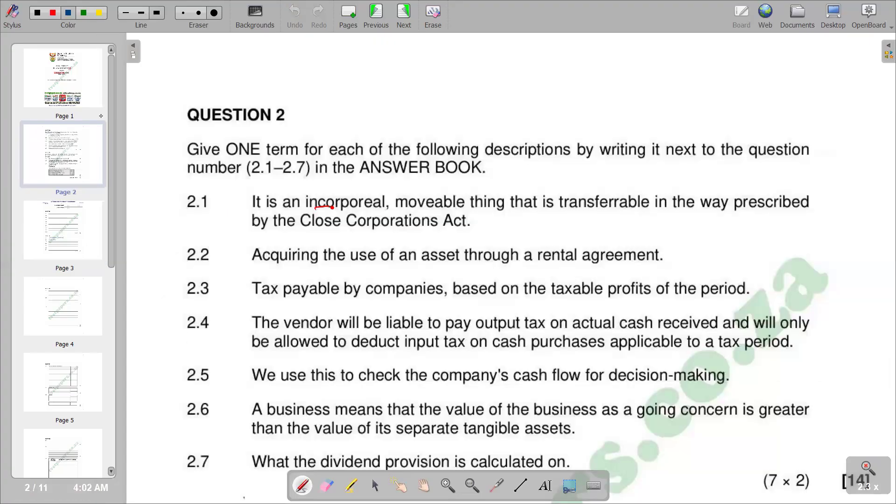2.3: Tax payable by companies are based on the taxable profits of the period. This is corporation tax. Corporation tax is tax on the profits of a corporation that generates revenue, usually through the revenue collection procedures done by the government. It's based on the profits that has been made by the cooperation as a business. 2.3 is corporation tax.